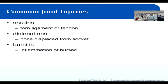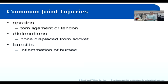Dislocations are where a bone is displaced from its socket. You commonly see these in fingers, shoulders, knees, and hips. Bursitis is an inflammation of the bursae — the fluid-filled sacs that cushion your joints. This is usually related to overuse; for example, a pitcher might develop bursitis from repeatedly performing that pitching motion.